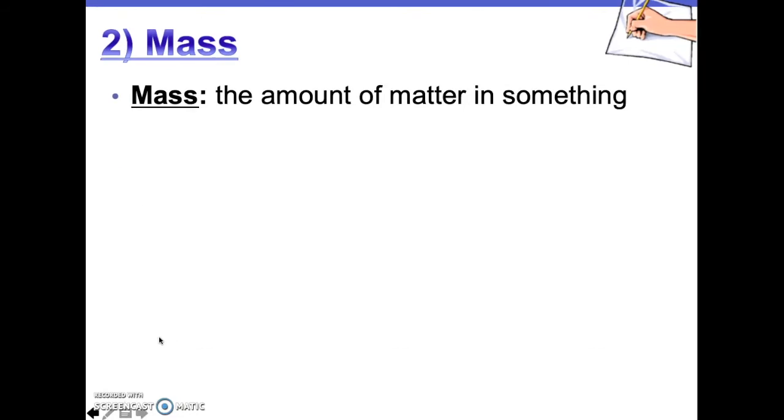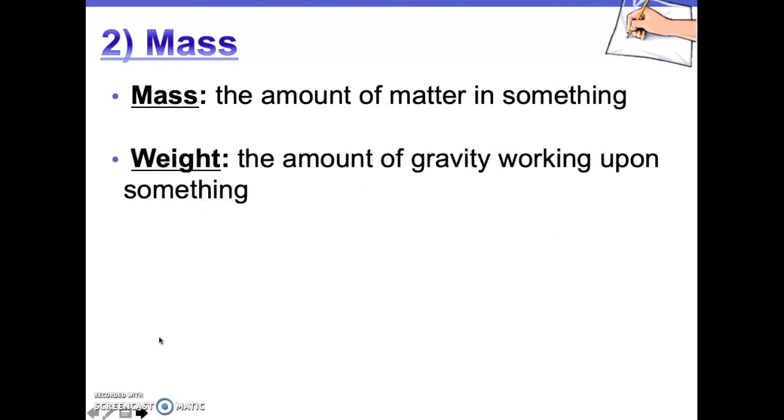The second physical property we are discussing is mass. Mass is the amount of matter in something and we have learned the definition of matter which also included mass since matter is anything that has mass and takes up space. But students sometimes confuse the concept of mass with weight. So today I want to ensure that this concept is clarified for you.